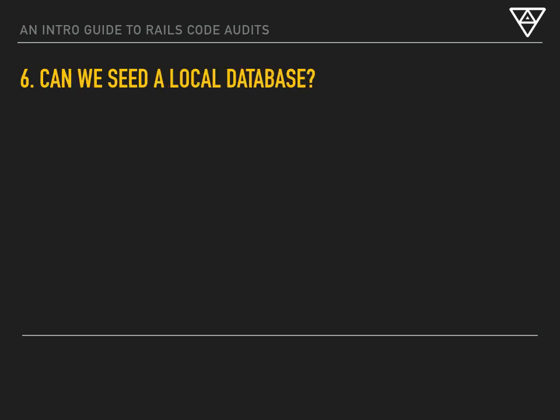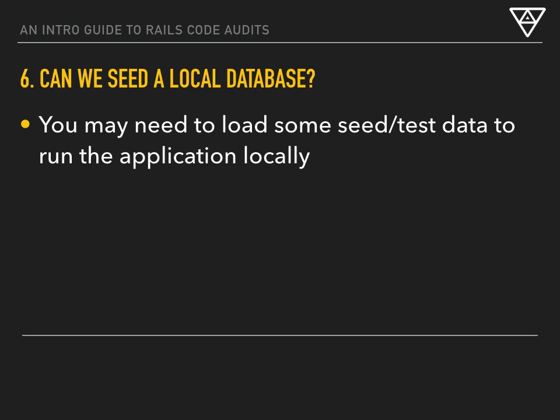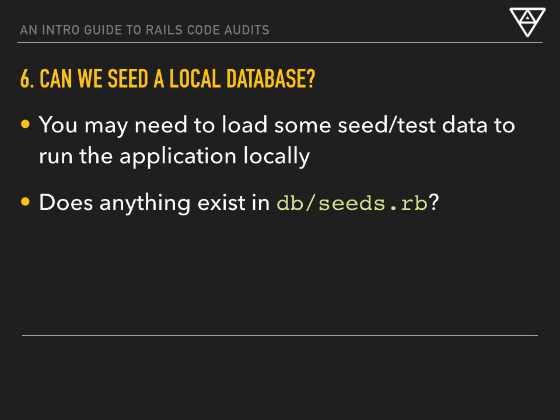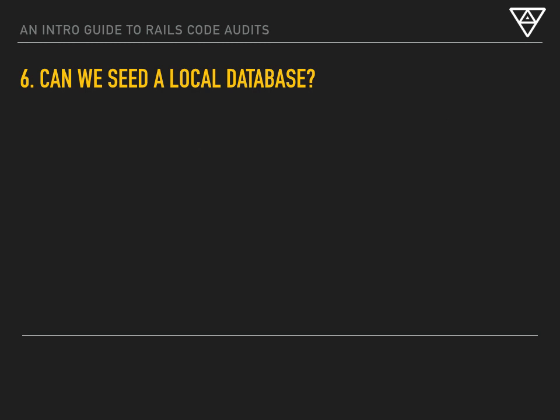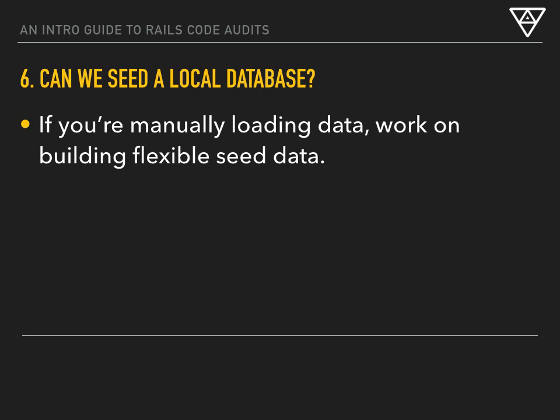You should be using a password manager of some sort to share those things with other developers. Step six, we're going to see if we can set up the local database. Depending on the version of Rails you're running, we'd hope to find some seed data that we could load to help run the application in a local development environment. One alternative we often see is needing to load a recent database backup from production or staging environments. While this can do the trick, it does have its own problems. For example, let's say your laptop gets stolen at the coffee shop — now your client's database is floating around who knows where. So is there anything in the seeds file? Try to avoid downloading production databases on a regular basis and sharing those amongst your development team — find another way.